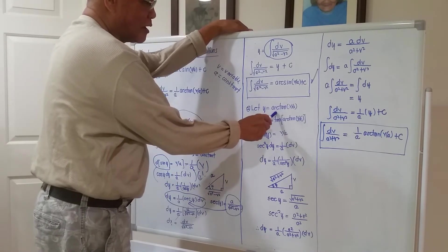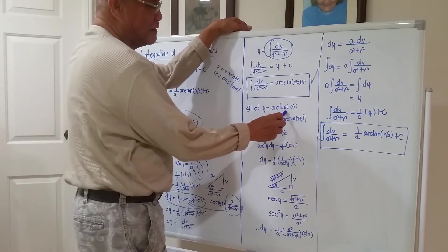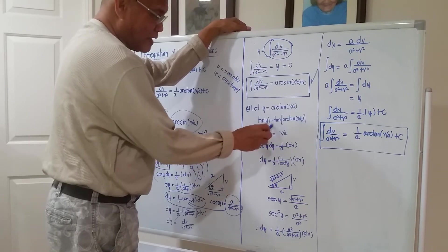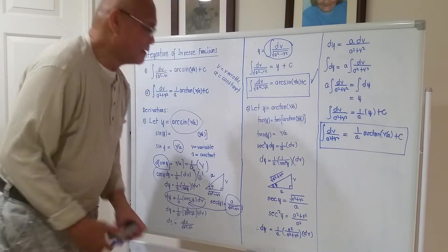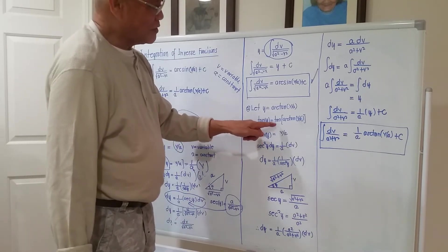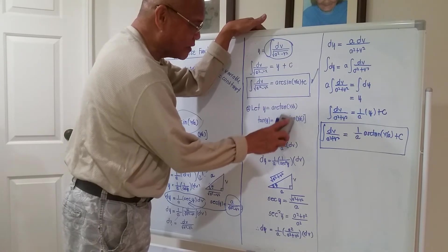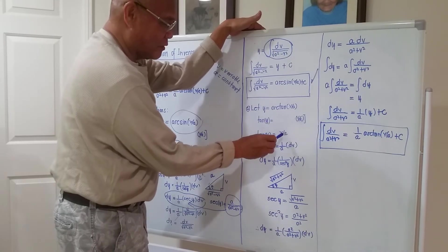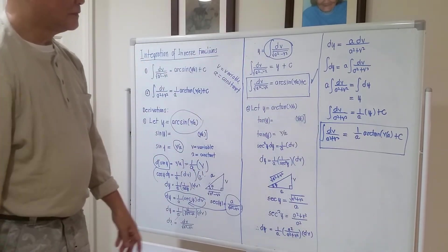We let y equal to arc tangent of b over a. To eliminate this arc tangent, take the tangent of both sides. The tangent of y equals the tangent of arc tangent of b over a. The tangent going near the arc tangent means they cancel out each other, so what comes out on the right-hand side is just b over a. Meaning, tangent of y equals b over a.